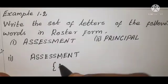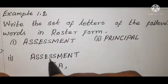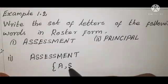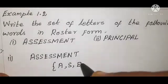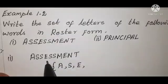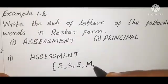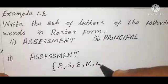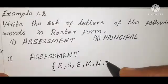First word 'assessment': A appears — write once. S appears four times — write once. E appears two times — write once. M, T are listed once each. So the set of letters of 'assessment' in roster form is {A, S, E, M, T}.